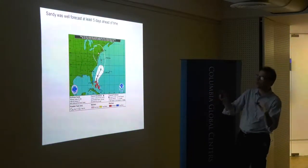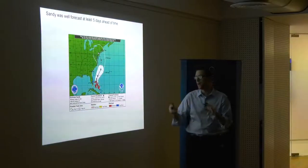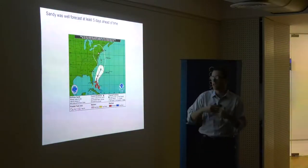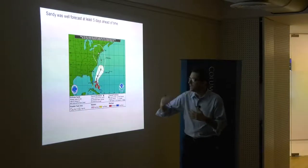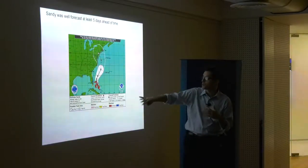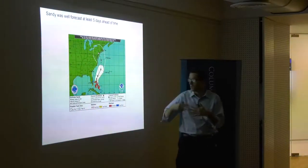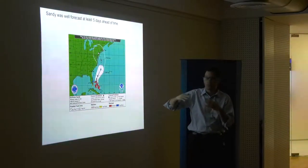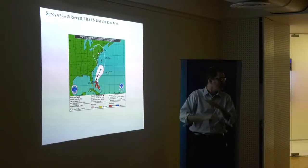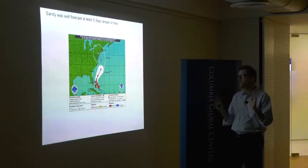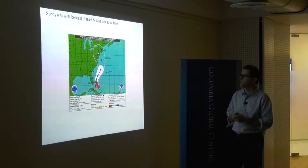The storm was forecast very well — the National Hurricane Center forecast from five days before landfall was almost precisely what happened. This so-called cone of uncertainty gave some idea of uncertainty, but in fact the forecast track was consistent and everybody knew pretty well what was going to happen.